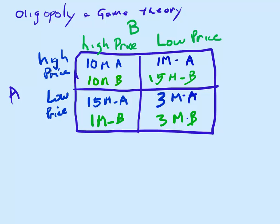Let's look at it the opposite way. If A chooses a high price, does B want to have a low price and make 15 million or a high price and make 10 million? 15 million sounds better. On the other hand, if A has a low price, does B want to make 3 million or 1 million? B would prefer 3 million.